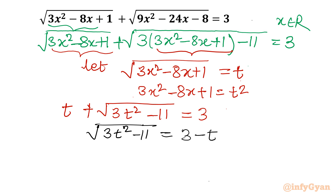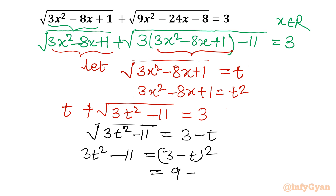Now I will square both sides. After squaring, the equation becomes: 3t² - 11 equals (3 - t)². Now the (a - b)² formula comes into the picture. Expanding the right side gives 9 + t² - 6t, and the left-hand side remains 3t² - 11.